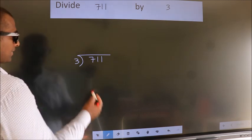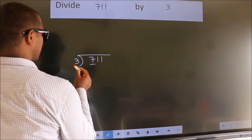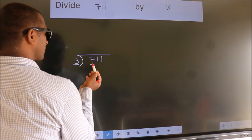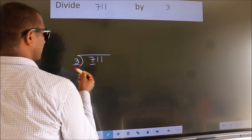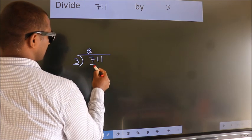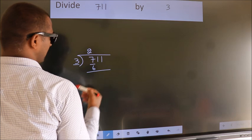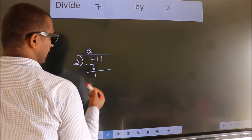Next, here we have 7, here 3. A number close to 7 in the 3 table is 3 times 2 equals 6. Now we subtract and get 1.